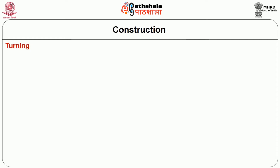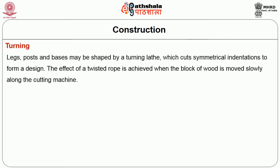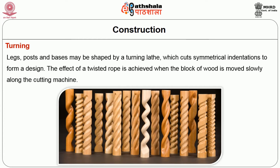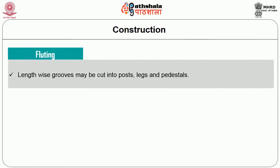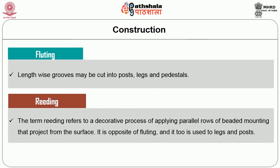Turning is another method to decorate furniture. Legs, posts and bases must be shaped by a turning lathe, which cuts symmetrical indentations to form a design. The effect of a twisted rope is achieved when the block of wood is moved slowly along the cutting machine. Fluting is another way to decorate wood, where lengthwise grooves may be cut into posts, legs and pedestals. Reeding refers to a decorative process of applying parallel rows of beaded moulding that project from the surface; it is the opposite of fluting and is also used on legs and posts.